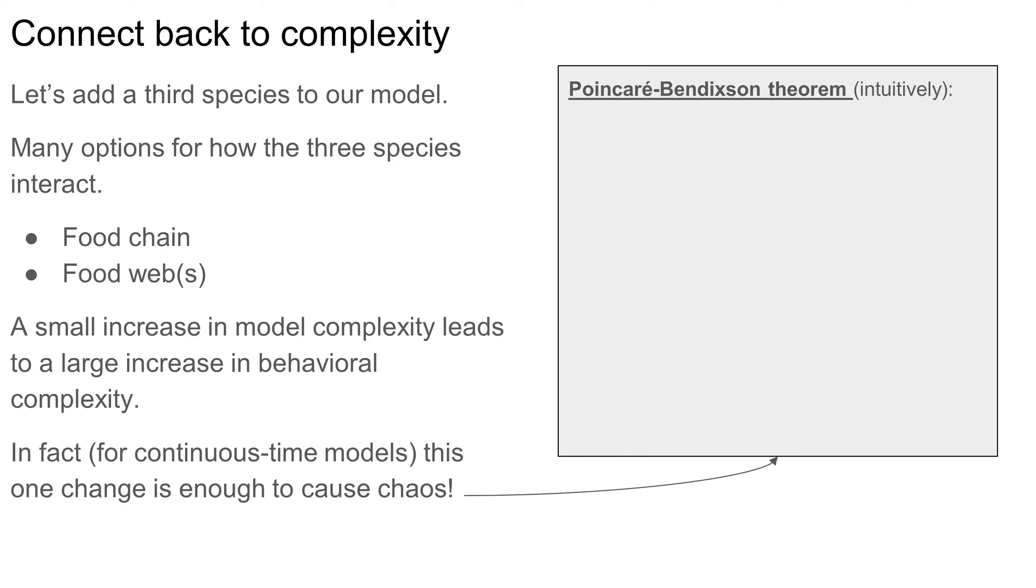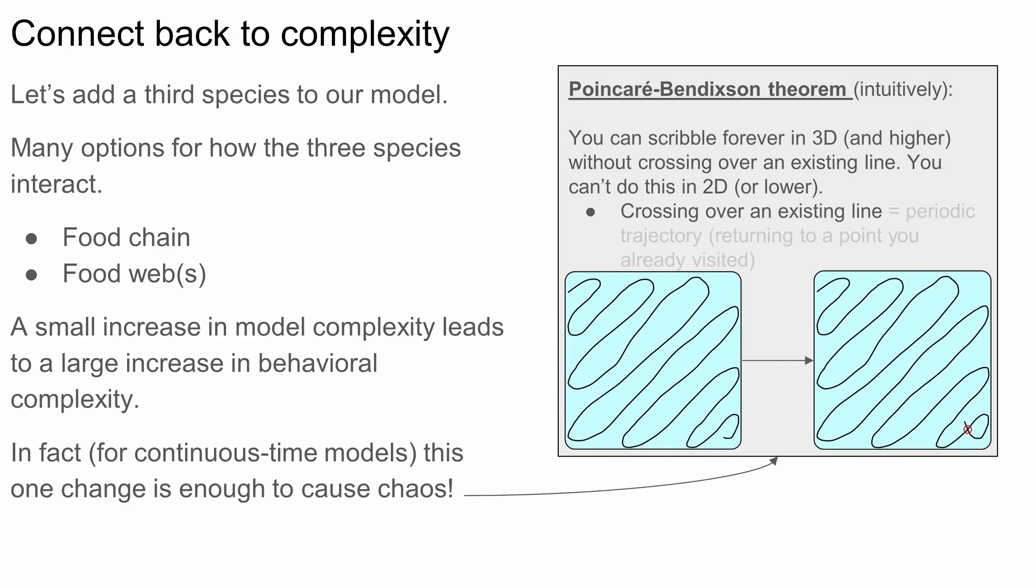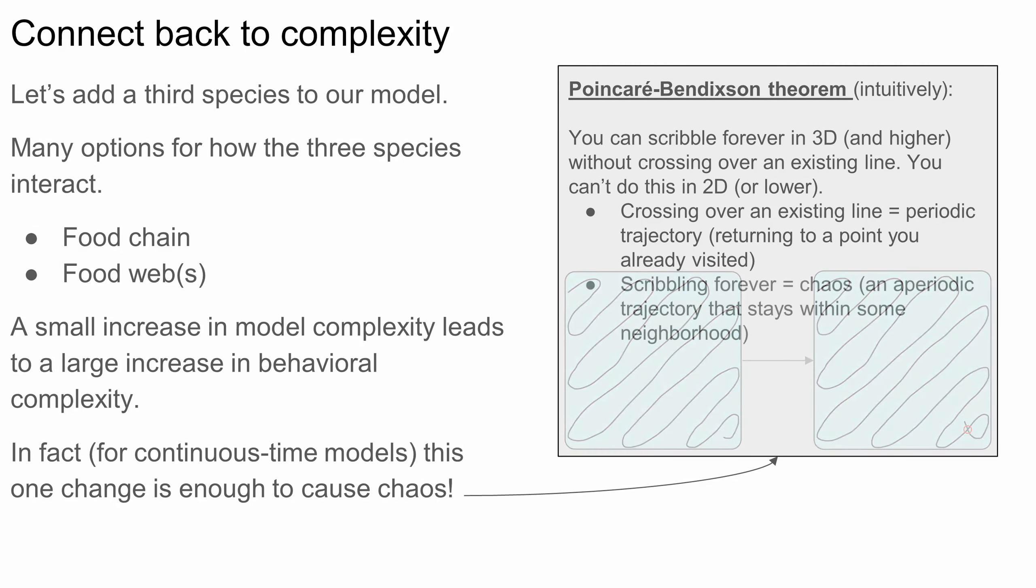I'll provide an intuitive description of this theorem without going into the math. Think of it this way. If you start scribbling some arbitrary curve in a region of 2D space, eventually you'll have to cross over some part of the curve you drew earlier. As soon as you do this, you're revisiting a point in 2D space you visited before, and that's the exact definition of periodic behavior. However, if instead you're scribbling in a region of 3D space, you can scribble forever without crossing over an existing line. Well, this is an intuitive definition of chaos.